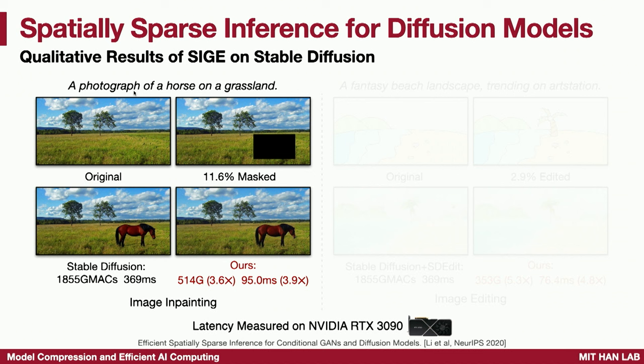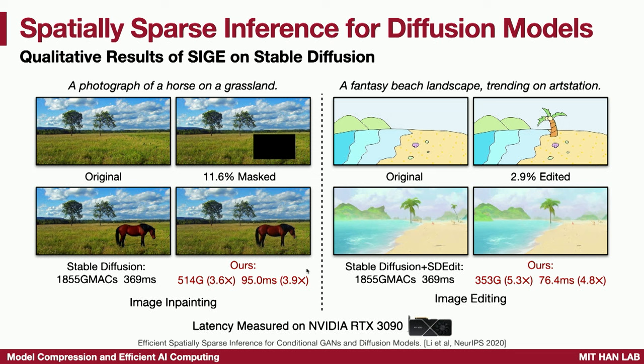For example, given a photograph of a horse on a grassland where we want to in-paint a new element, the original compute takes 1800 GMACs. Using our technique, only 500 GMACs is needed for similar results. Similarly for a fantasy beach landscape on ArtStation, adding a coconut tree — the generated image has a comparable coconut tree to the baseline. Since we are only editing a smaller region, which is very practical for an artist drawing on a small region, it saves 5x. The larger the edit region, the smaller the saving; the smaller the edit region, the larger the saving.